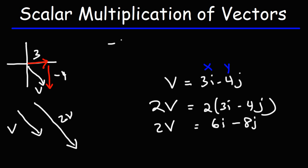Now what about negative 3V? What's the value for that? Negative 3V is just going to be negative 3 times vector V, which is 3i minus 4j. So it's going to be negative 9i plus 12j. Here, notice the x component is positive, and the y component is negative.